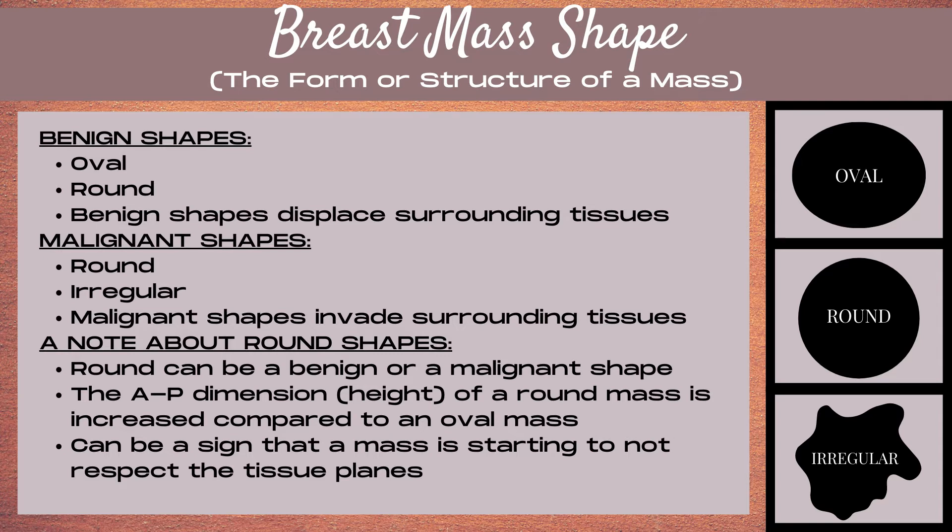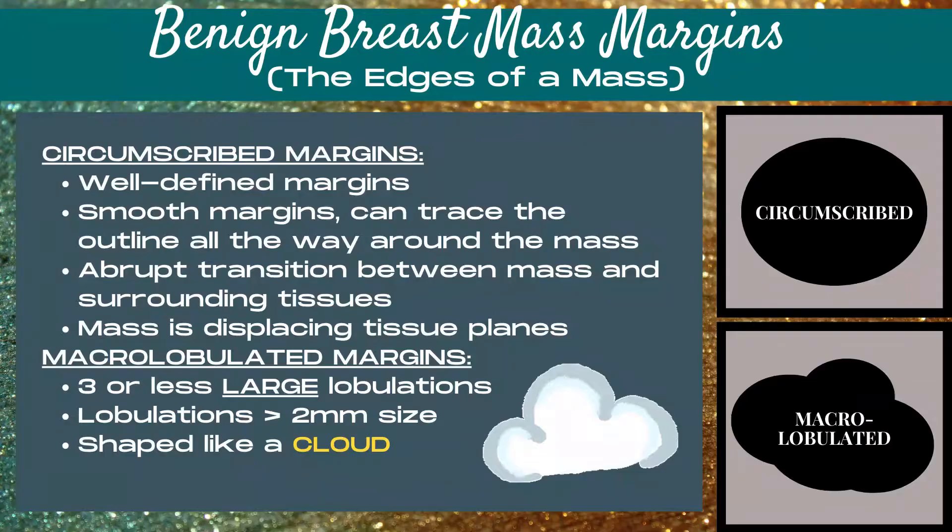One thing to note about round shapes: round can be either a benign or a malignant shape. With a round mass, the AP dimension or the height of the mass is increased compared to an oval mass. This can be a sign that a mass is starting to not respect the tissue planes and starting to grow more vertically in the tissue.